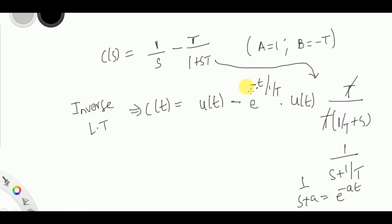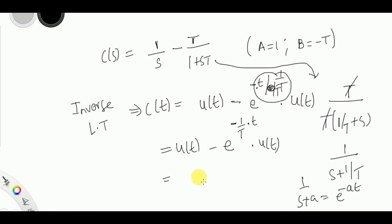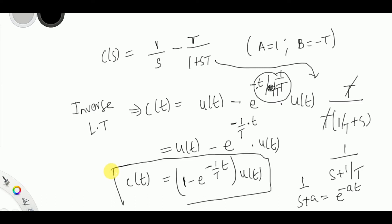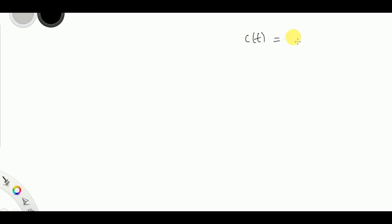Correcting a sign mistake: the final result is c(t) = [1 − e^(−t/T)]·u(t). This is the response of the first order system for a unit step input. Let me write this equation clearly again: c(t) = [1 − e^(−t/T)]·u(t). Now let me plot this step by step.